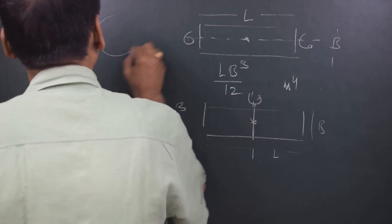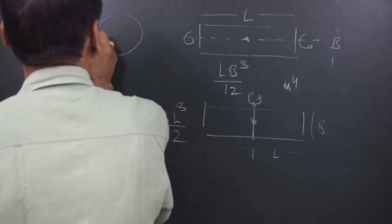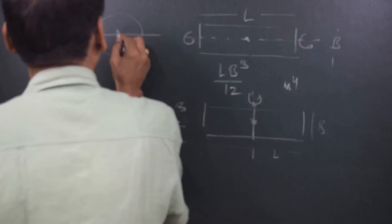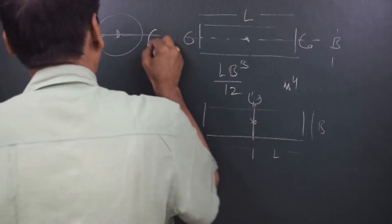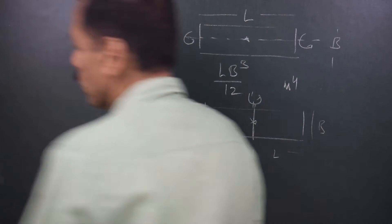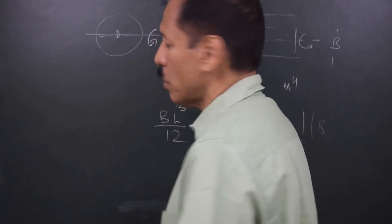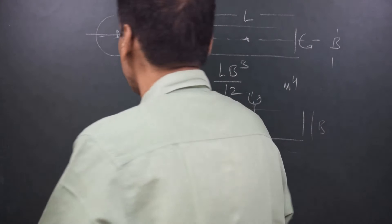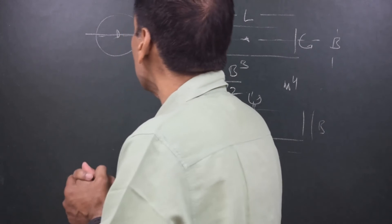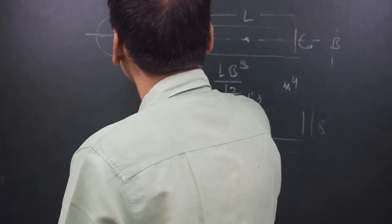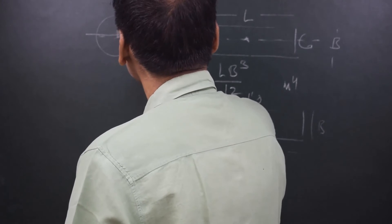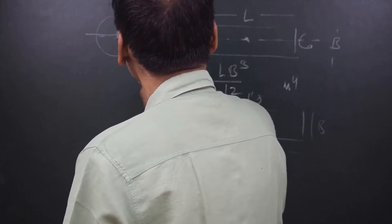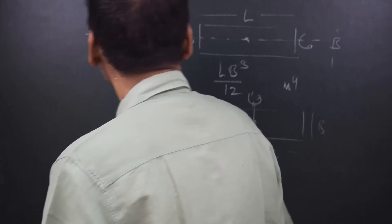If we consider the shape circle — here is the diameter, and here is the axis passing through the centroid, naturally, because the diameter always passes through the centroid. The moment of inertia about this axis is πD⁴/64.